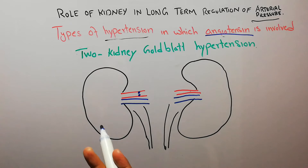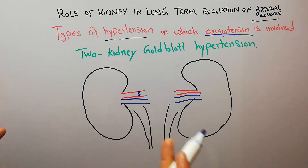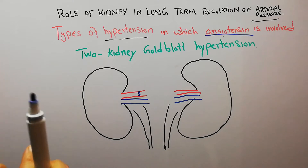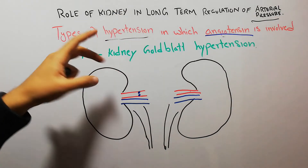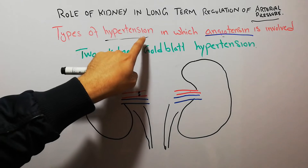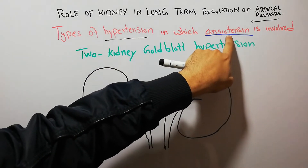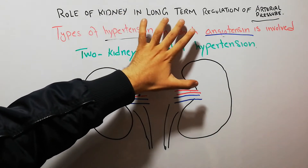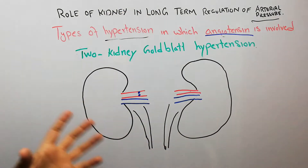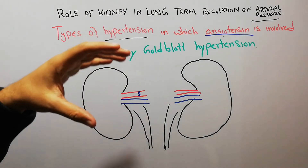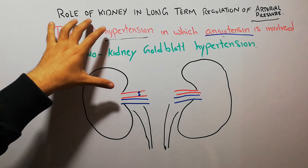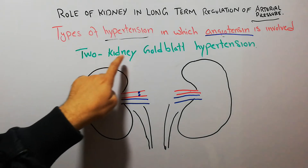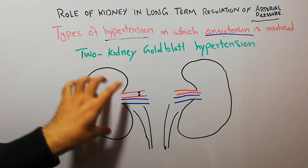Previously we also discussed renin-secreting tumor and infusion of angiotensin, which also led to hypertension — these are also types of hypertension due to involvement of angiotensin. Broadly, we are discussing the role of the kidney in the regulation of arterial pressure, and all these lectures are in continuation of that topic.